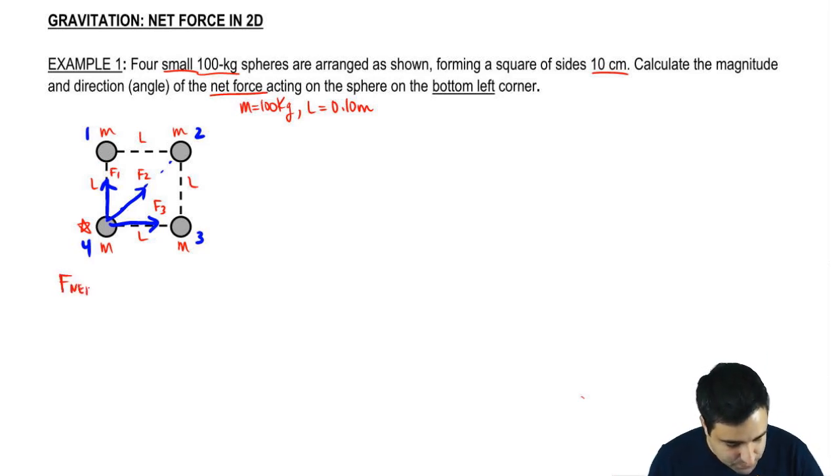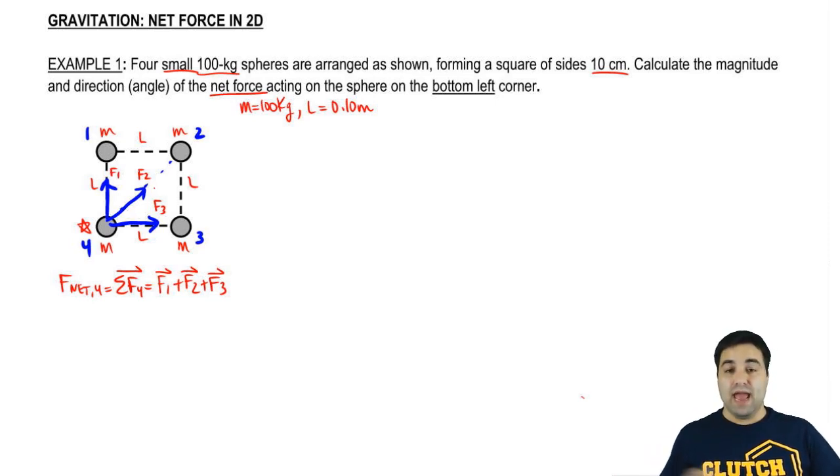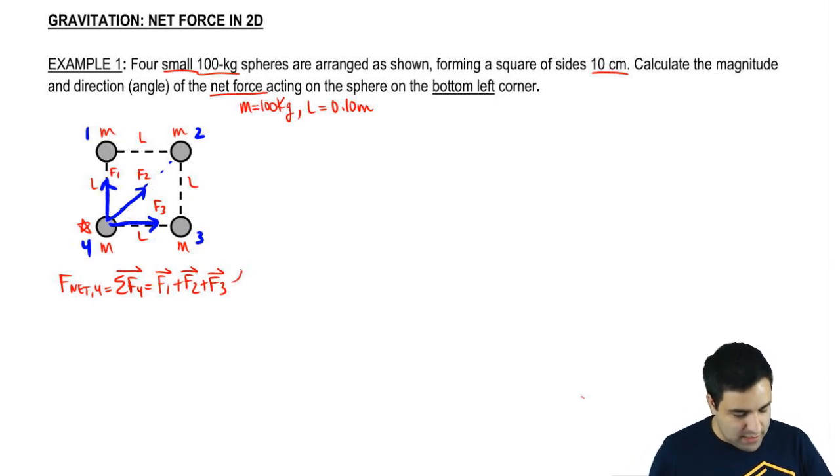So the net force acting on 4 is just the sum of all forces on 4, so it's just F1 plus F2 plus F3. But remember, forces are vectors, so this is a vector addition, which means you can't simply calculate those numbers and add them up as you would add regular scalar addition. You have to do vector addition here.